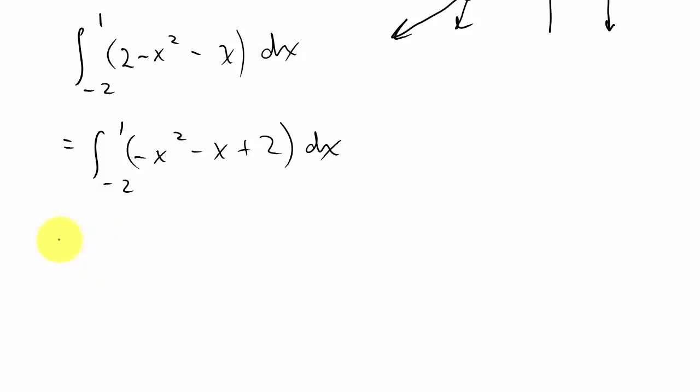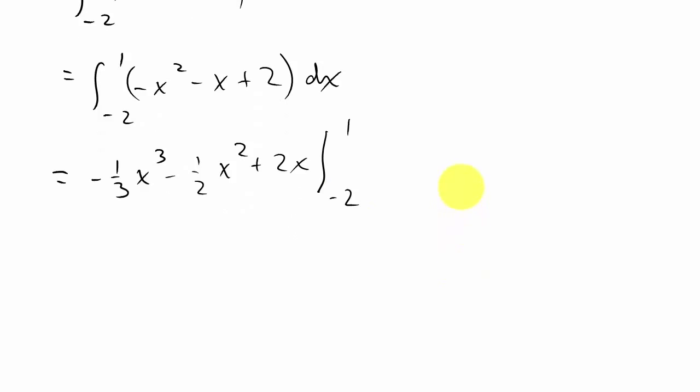So now let's integrate. So I'm going to get -⅓x³ - ½x² + 2x. And I'm going to evaluate that from -2 to 1.